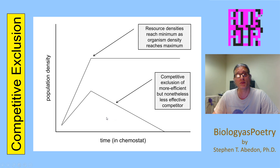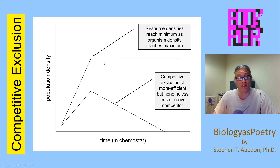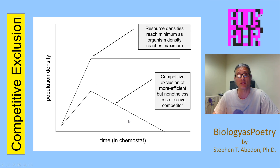So when you have two organisms with sufficient niche overlap found within the same environment, there will be a tendency for one organism to drive the other organism to extinction. This will happen especially at high densities of the better competitor organism, because they're reducing resource densities to the point where the other organism is simply no longer able to survive within that environment.